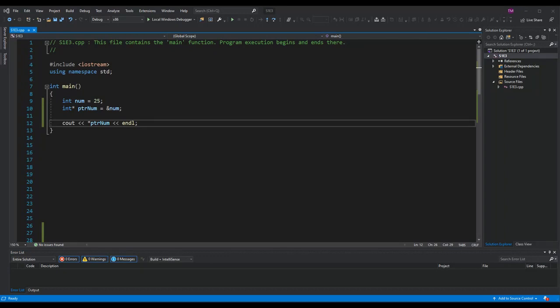We'll start again with our first variable, int num equals 25, and then create a pointer called ptr num equals ampersand num. Notice this time where I place the asterisk. It's immediately after the data type int. This is to demonstrate that you can use this format for creating a pointer. It is a personal preference. Here, I am initializing the pointer to the address of the variable num on line 10.